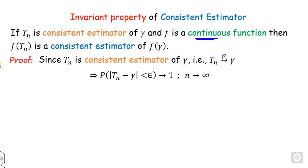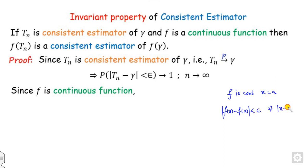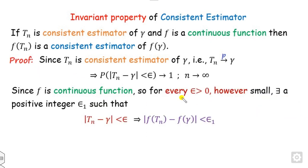Now, f is a continuous function. From calculus, we know that when a function is continuous at x = a, then |f(x) - f(a)| < epsilon whenever |x - a| < delta. Applying the same idea here: since f is continuous, for every epsilon > 0, however small, there is a positive delta_1 such that |t_n - gamma| < delta_1 implies |f(t_n) - f(gamma)| < epsilon.